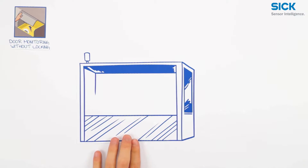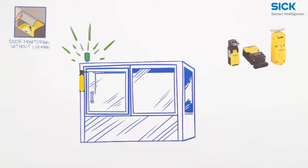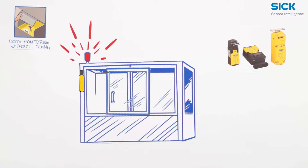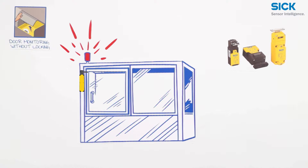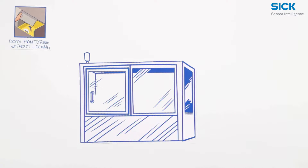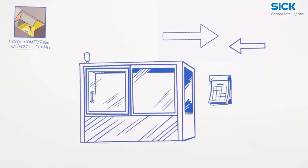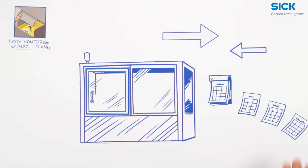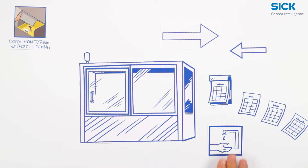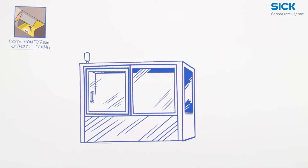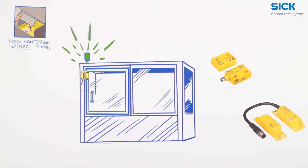To monitor protective doors, you can use electromechanical safety switches with a separate actuator. They switch the machine off if the door is opened, but also provide the retaining force that keeps the door closed in case of light vibrations. But what if it is too difficult to ensure the precise guidance of an actuator, or if the door gets misaligned as time passes, or if you have an application with strict hygiene standards? In these cases, you should use non-contact safety switches, which are resistant to offset and contamination.